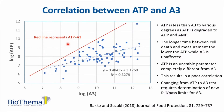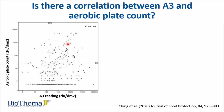Changing from ATP to A3 test requires determination of new fail-pass limits for A3. Then comes the question: is there a correlation between A3 and aerobic plate count?